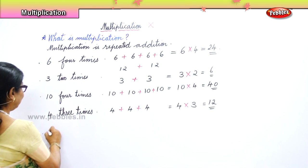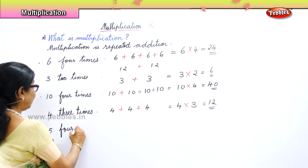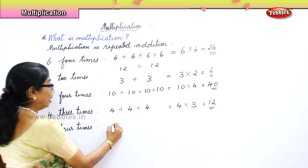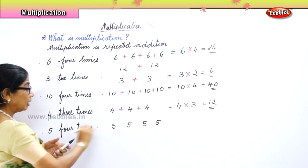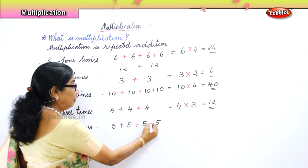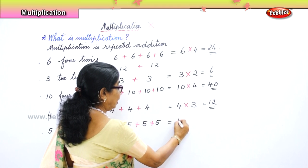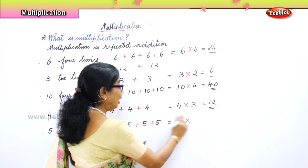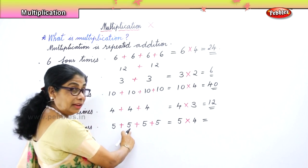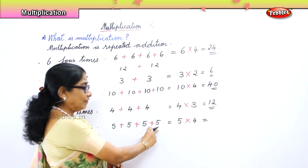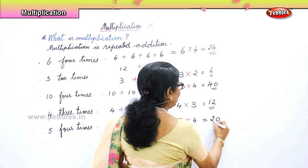Let's take another number: five, four times. What is five four times? Five, five, five, and five — that is four times. Five plus five plus five plus five. Five plus five is ten, ten plus five is fifteen, fifteen plus five is twenty. Five fours are twenty.